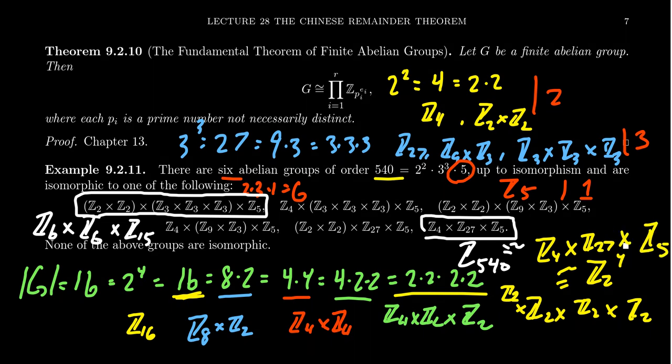And so each abelian group can be given into these elementary divisors that the fundamental theorem guarantees exist. And this is trying to say that abelian groups have this prime factorization, just like integers. We can factor them into these sort of unique primes in a manner of speaking.